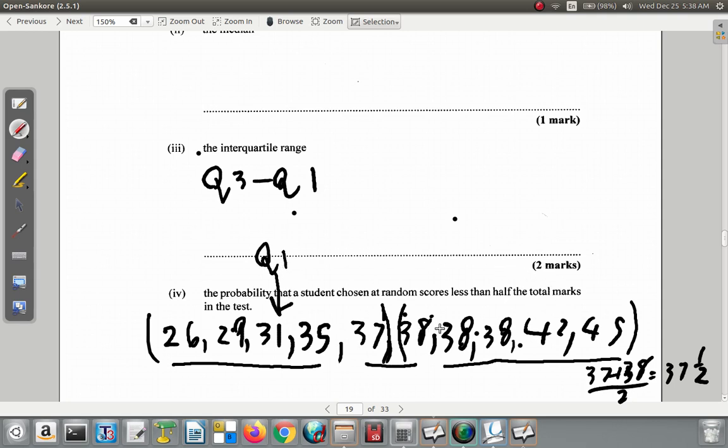So 31 is Q1 at the lower 50%. At the upper 50%, I mean 50 to 100%, half of that is 75%, which would be halfway between 50 and 100%. That's 1, 2, 3, 4, 5 numbers. The one in the center is 38. That's Q3.